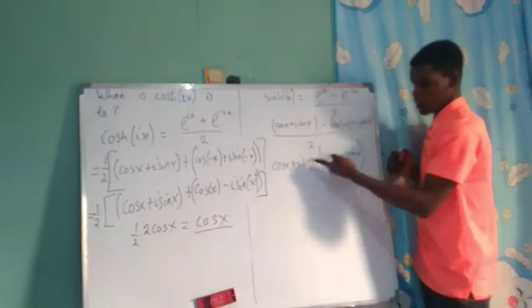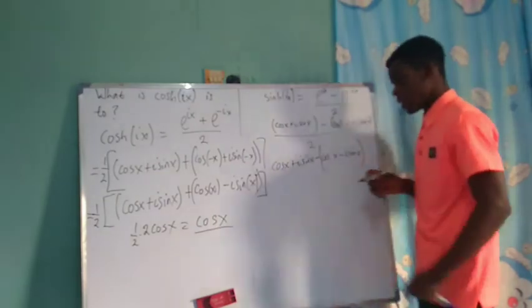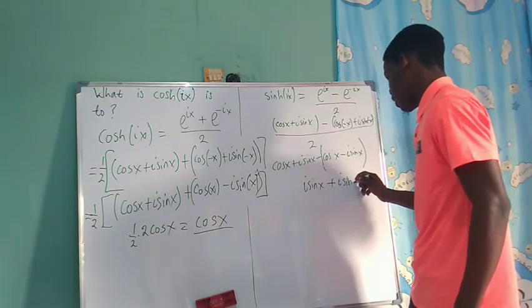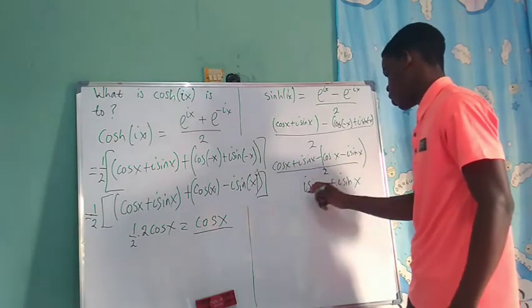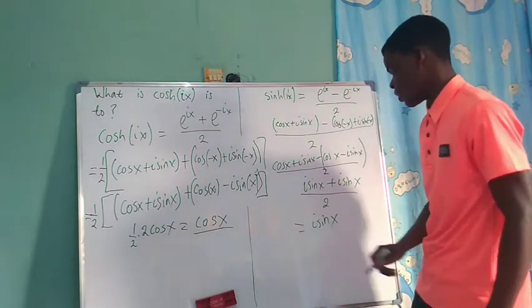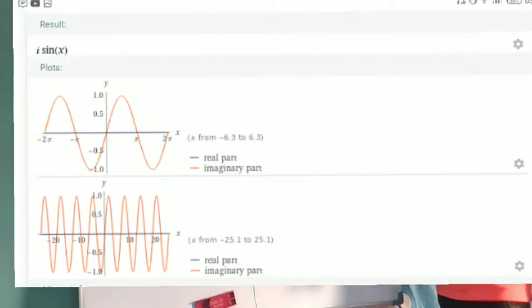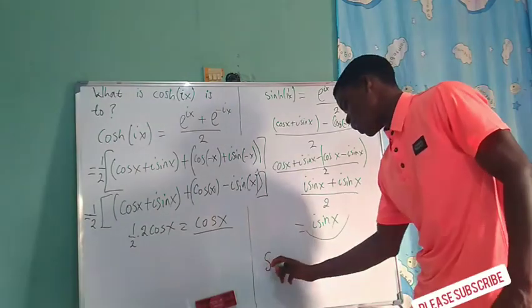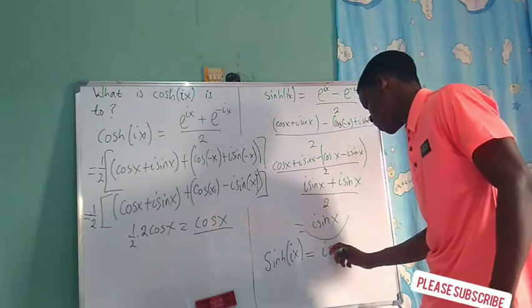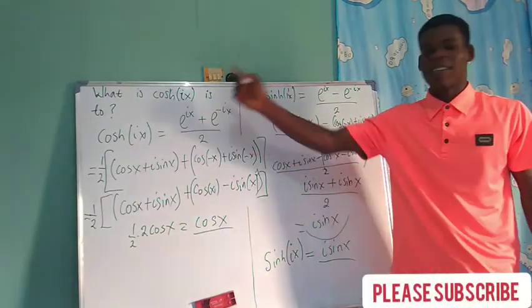And we have cosine of x minus cosine of x that gets to zero. Then i sine x minus negative i sine x that's just i sine x plus i sine x. Remember our denominator which was 2 divided by 2. This is just i sine x where the sum of this is just 2 of that. We cancel the 2 at the bottom and we get this. Oh that means that the sine or the hyperbolic sine of ix is i sine x. In fact is this even possible but well that's what you get.